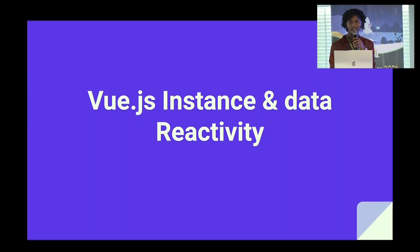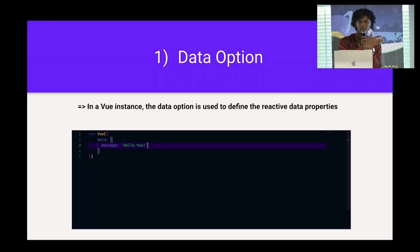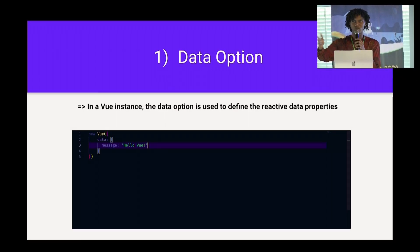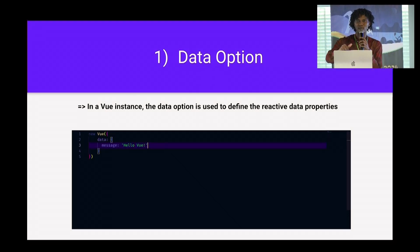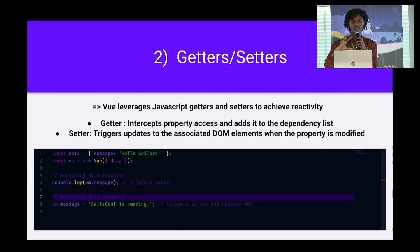Regarding Vue instance and data reactivity — when the Vue instance is created, the data option is used to define the reactive data properties. For example, we have a variable like 'message' with a value of 'Hello Vue'. At every point 'Hello Vue' changes to 'Hello Sales' or 'Hello Toby' or whoever it is, that is a reactive process — when you call that variable at any point in your DOM, you get the most updated version of that particular data. Vue.js leverages JavaScript getters and setters to achieve that reactivity.